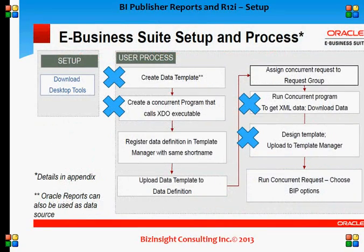These are the basic setup steps. Items marked with a cross are not required because we are not building reports from scratch — we are using our existing concurrent program and building the BI Publisher template on top of it. What we need is: download the desktop tool, get the XML data, design your layout, register the data definition and templates, then upload the template. The step to create a new concurrent program with a request group is not required since we already have one. Once done, just run the report and it is ready.